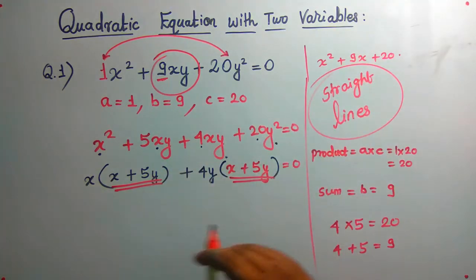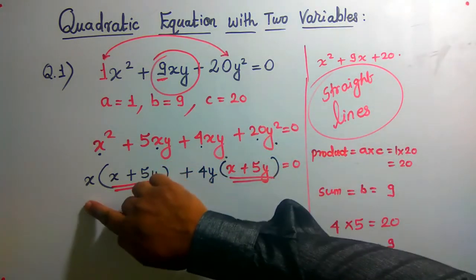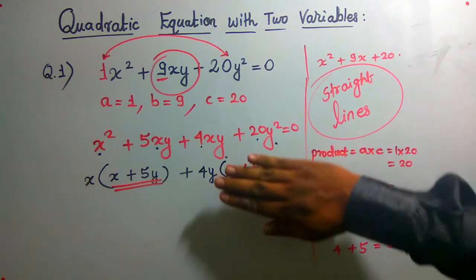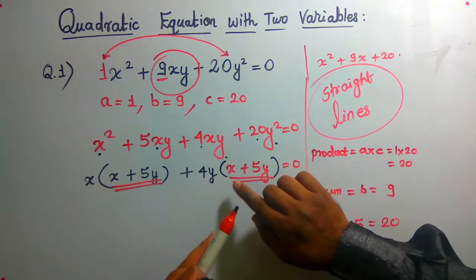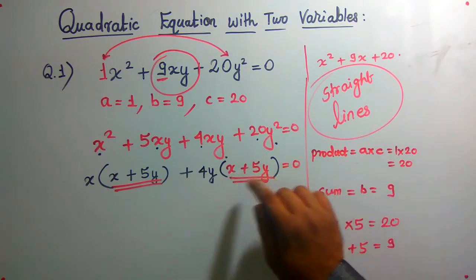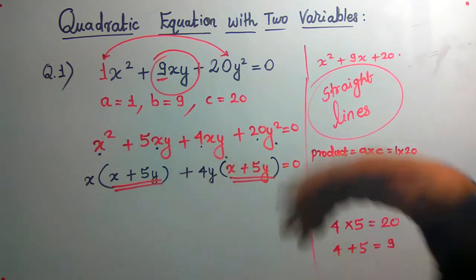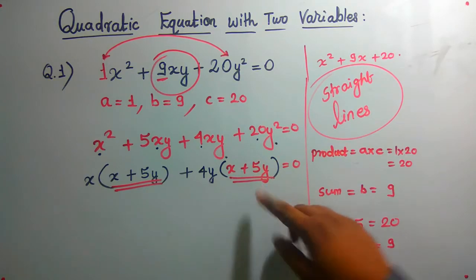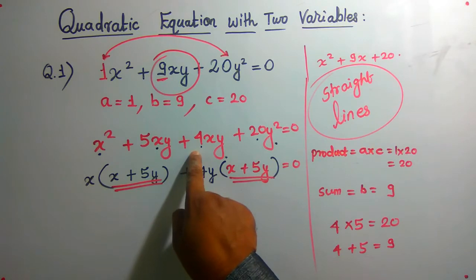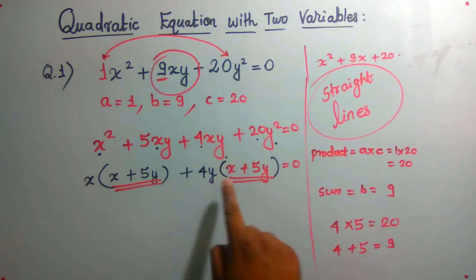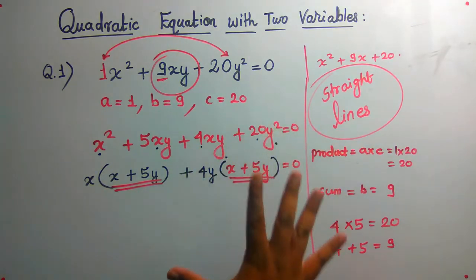So the equation is x + 5y appearing here. What you take common from here should appear there. So if you took x common and got x + 5y here, then from 4xy you should take common only 4 and y. You don't have to think that the whole common will be removed.